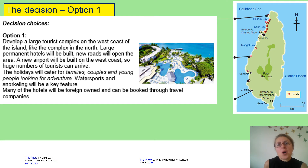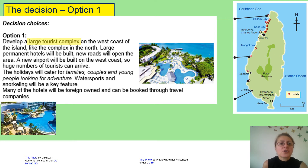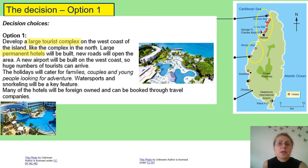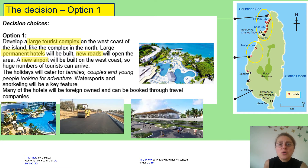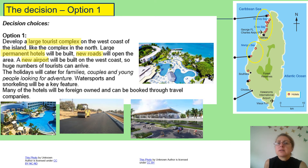Option one is to develop a large tourist complex on the west coast of the island, like the complex in the north. Large permanent hotels will be built, new roads will open the area, and a new airport will be built on the west coast so that huge numbers of tourists can arrive. This is clearly an attempt to develop mass tourism. Consider what problems these roads, permanent hotels, and new airports might create, but also consider the huge benefits of mass tourism to this western part of the island.